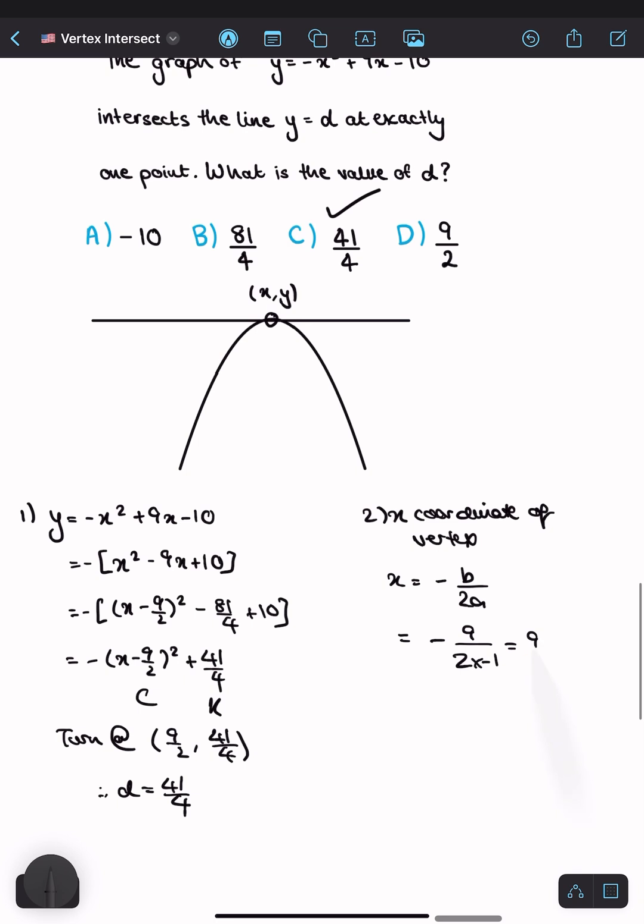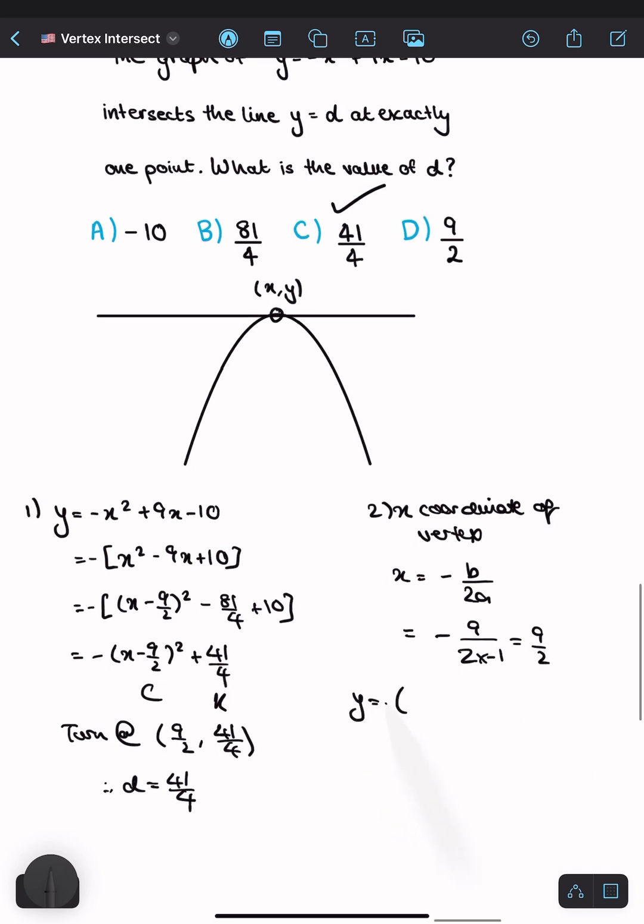Then substitute x = 9/2 into the equation, and we get d = 41/4 again.